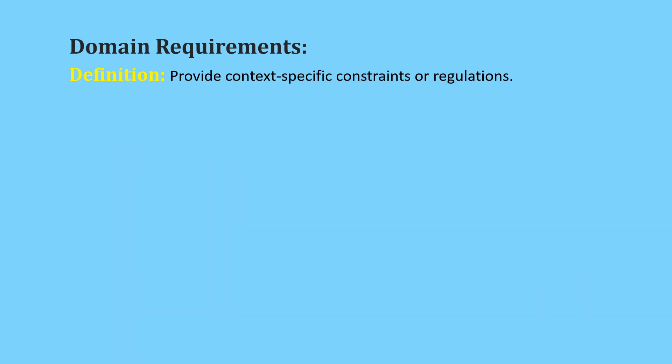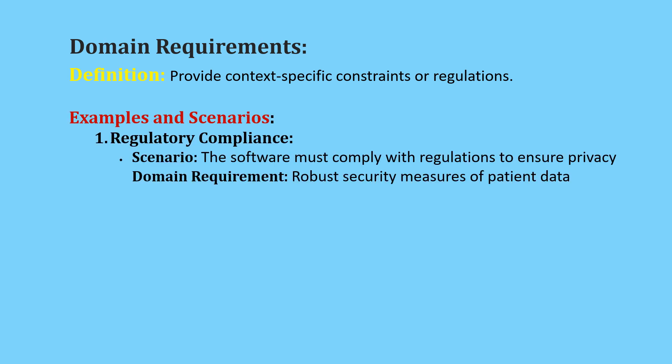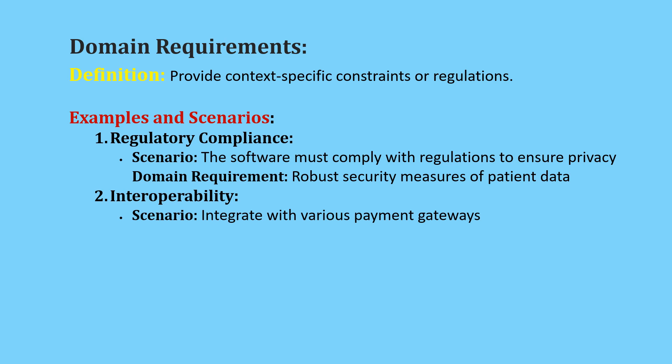Domain requirements: domain requirements are specific to the application domain and provide context-specific constraints or regulations. Example one — regulatory compliance. Scenario: a company is developing healthcare management software for a hospital. The software must comply with HIPAA regulations to ensure the privacy and security of patient health information. Domain requirement: the software must implement robust security measures, including encryption of patient data and role-based access control to comply with HIPAA regulations.